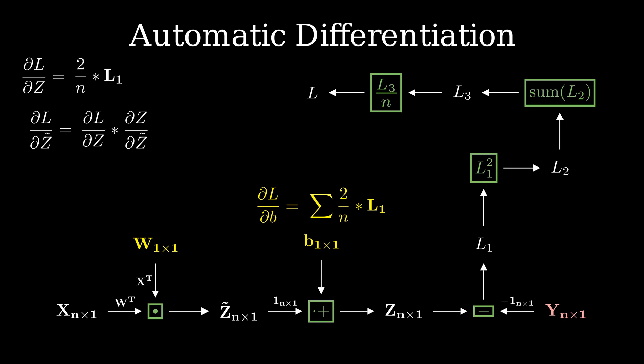For z tilde, we can do the usual thing and multiply both local and global gradients element wise.